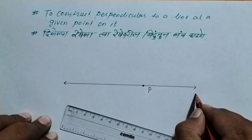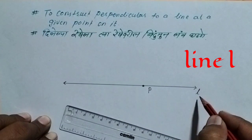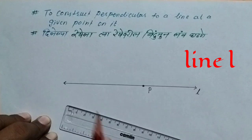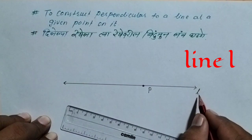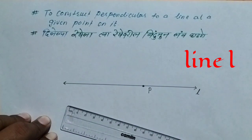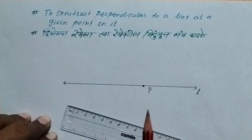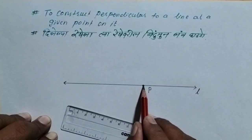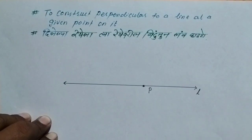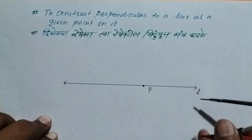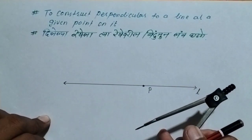Suppose this is line L, also called line AB. On this line L, we take a point P. We have taken point P on line L. Now from this point P, we are going to construct a perpendicular.